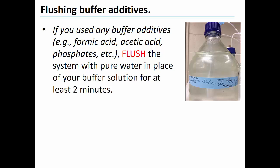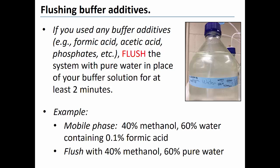For example, if your mobile phase is composed of 40% methanol and 60% water containing 0.1% formic acid, at the end of each batch you must flush the system with 40% methanol and 60% pure water. Doing so removes the buffer additive from the system. This is important because buffer additives can corrode the metallic components of the instrument.